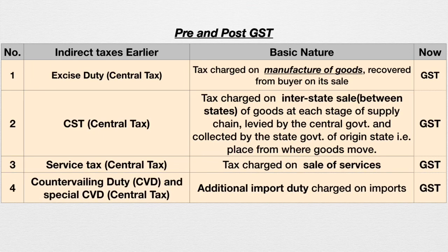Fourth is countervailing duty and special countervailing duty. This was an additional import duty charged on imports. It has now been replaced with GST. Even after implementation of GST we still have customs duty, that is regular import duty; however, the additional import duty has been replaced with GST. This additional import duty was charged by the government with the objective to raise the price of imported products, which protects domestic industries.